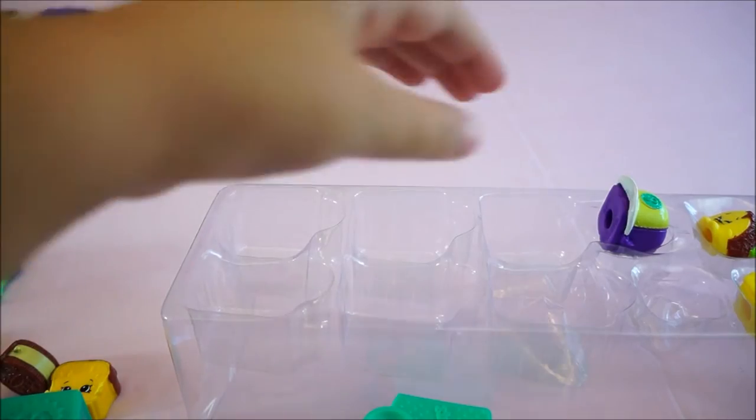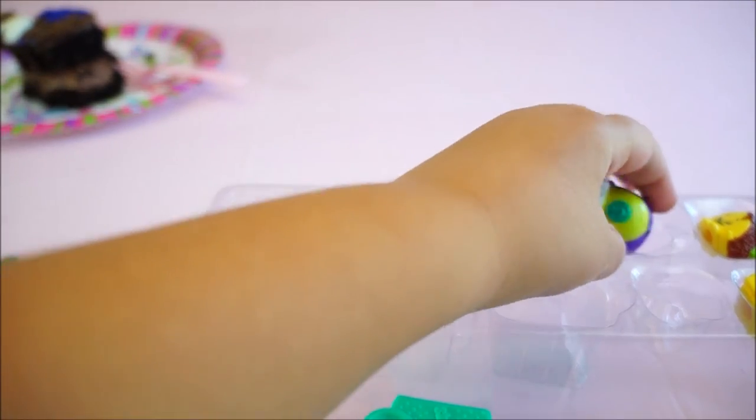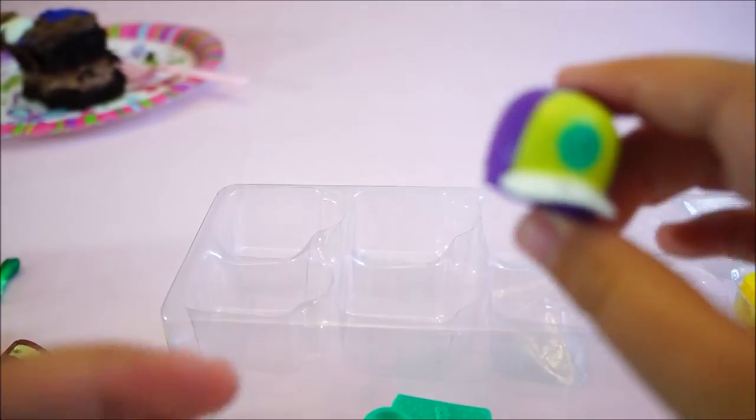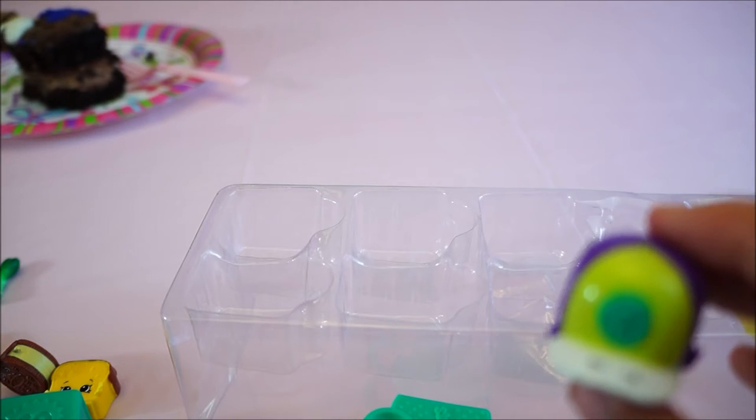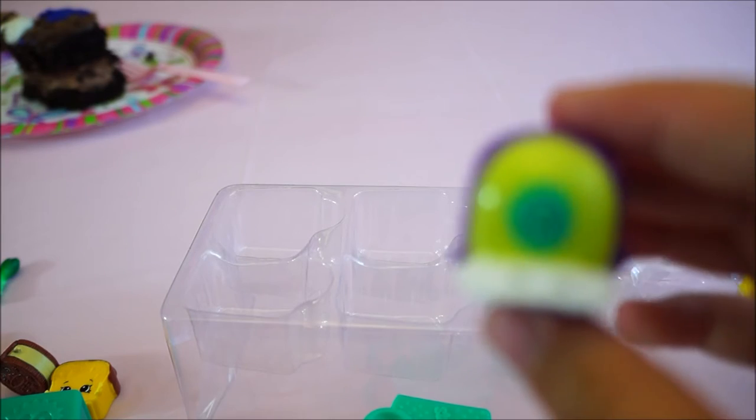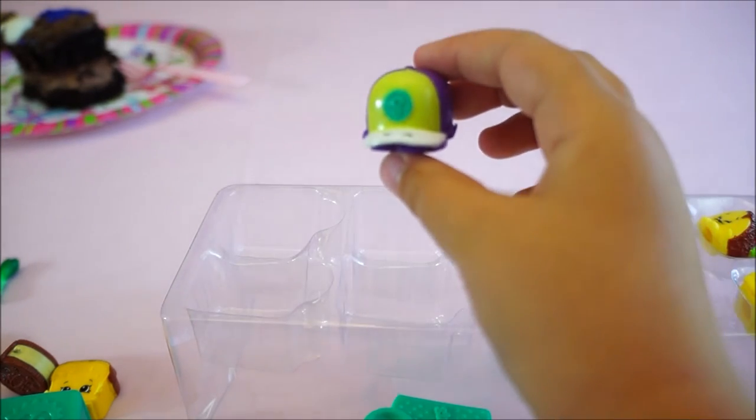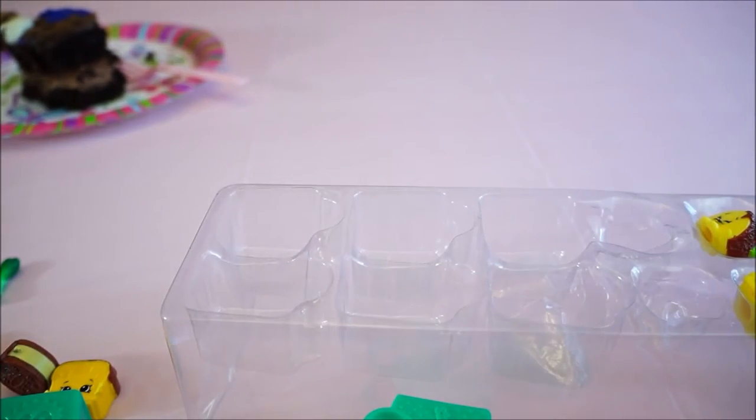Let's open up our next Shopkin. Looks like an ice cream sandwich. I have no idea what this one is. She's Noah Slice. Let's open up the next one. She's a cookie. This is chocolate-covered, ultra-rare Creamy Cookie. She looks really cool and yummy.